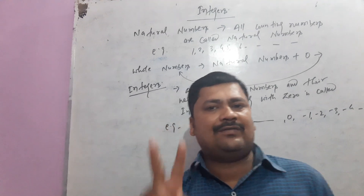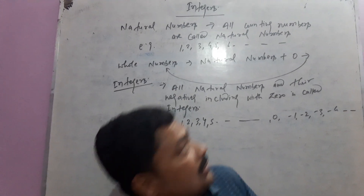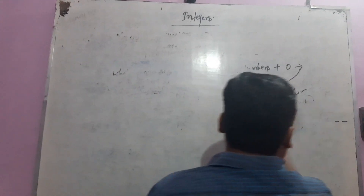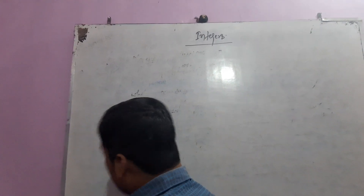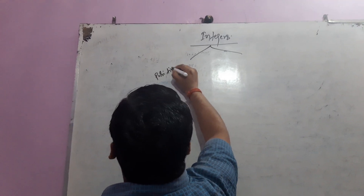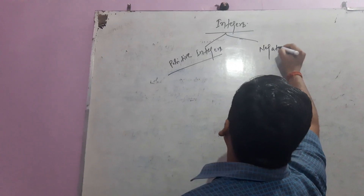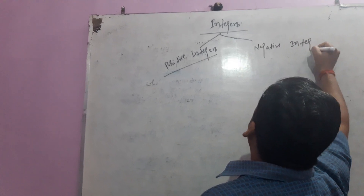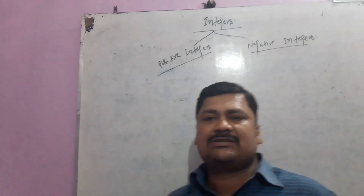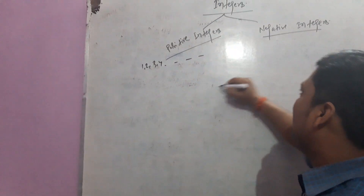Integers are of two types: one is positive integer and another one is negative integer. All integers that contain a positive sign, like 1, 2, 3, 4, 5 and so on, are called positive integers.